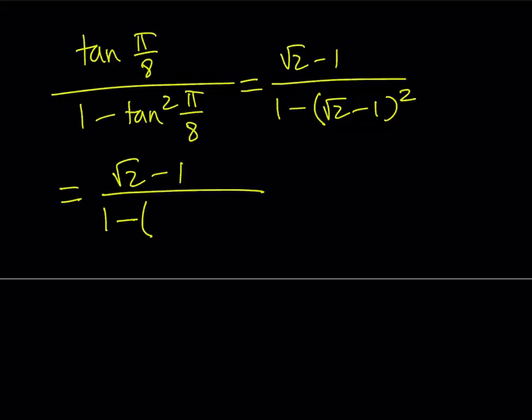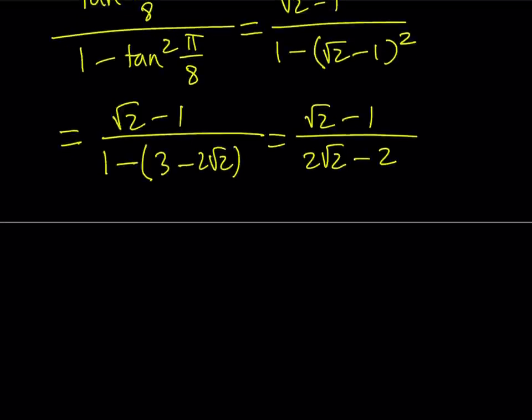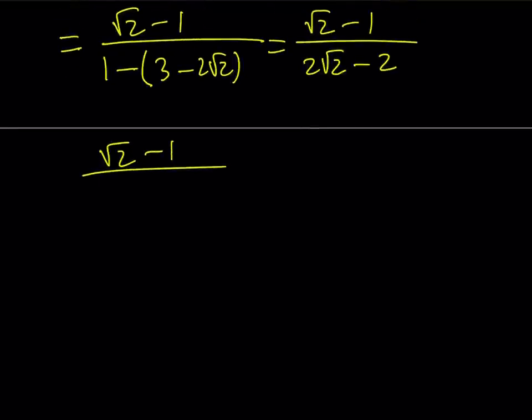So a minus b quantity squared. A squared plus b squared. That's 3 minus 2 root 2. A little bit of math, algebra, manipulation, whatever you want to call it. 1 minus 3 is negative 2. So it's going to give me 2 root 2 minus 2. And it is factorable. I can just write it as root 2 minus 1 divided by 2 times the quantity root 2 minus 1. And yes, you can cross out root 2 minus 1, leaving you with 1 half.